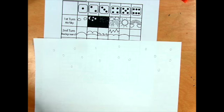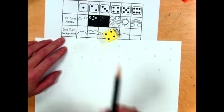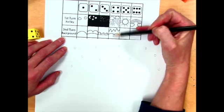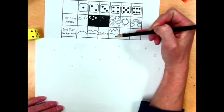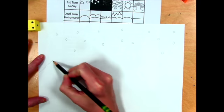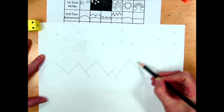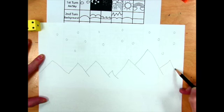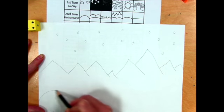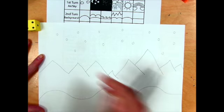My second turn, I roll the dice again and get a four. I look in row four, and it says I need to draw the mountains and then the rolling hills under it. So I'm going to do mountains and then the rolling hills under it.